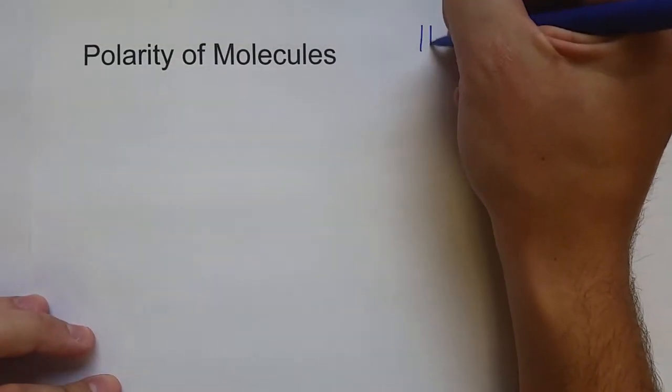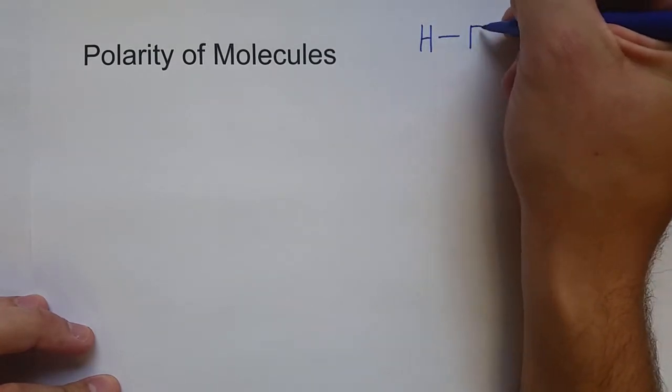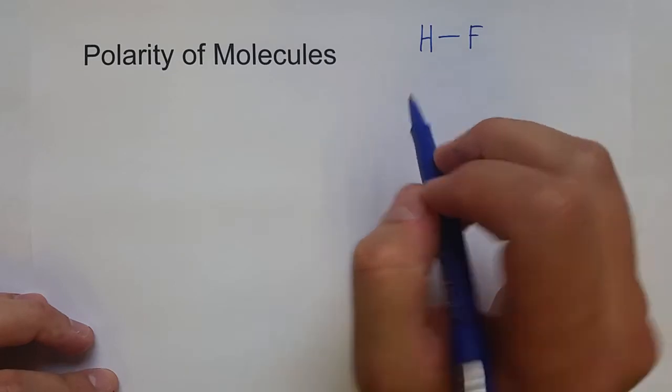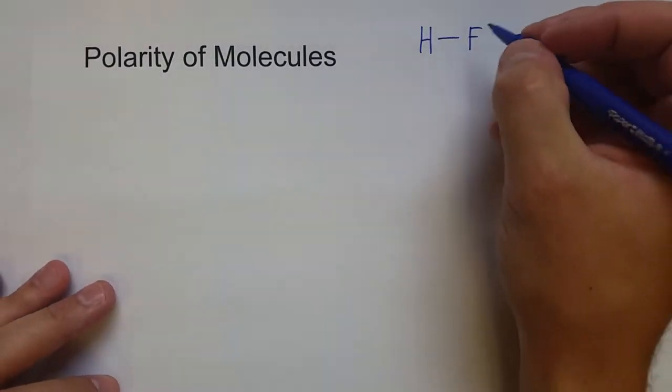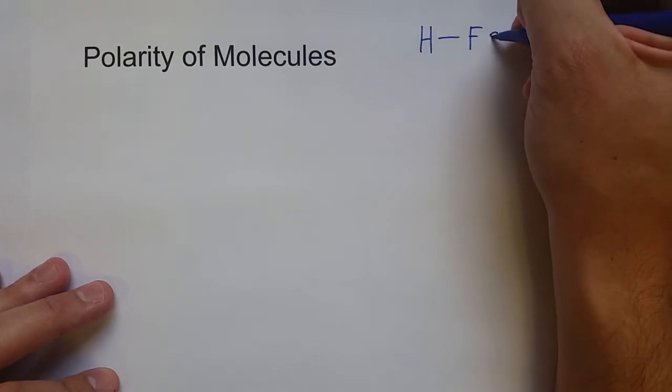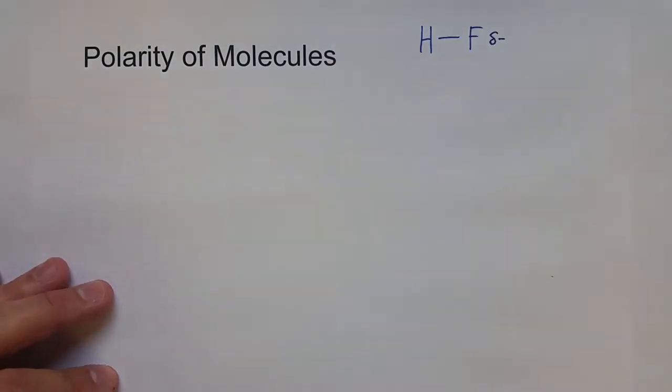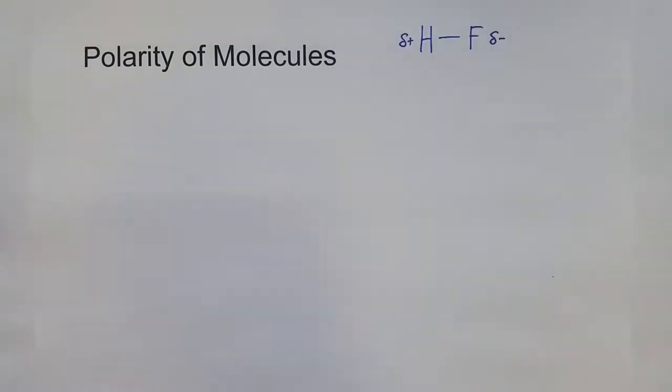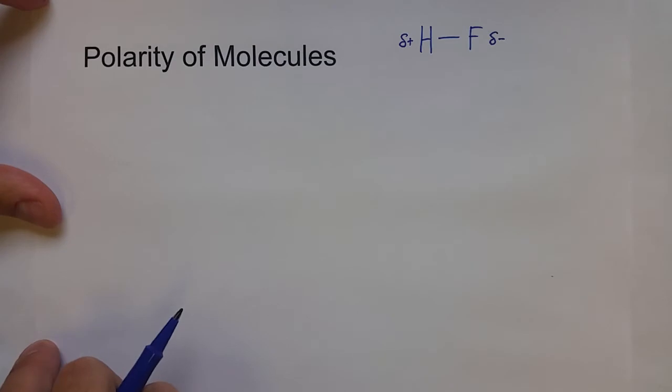We already know what a polar bond is. It's when electrons are shared between two atoms that have very different electronegativity values. Fluorine is very electronegative, hydrogen is average. And so what happens is that there's a partial negative charge that sets up on the fluorine atom because of the excess electron density there. And of course there's a partial positive charge by the hydrogen because of the lack of electron density.